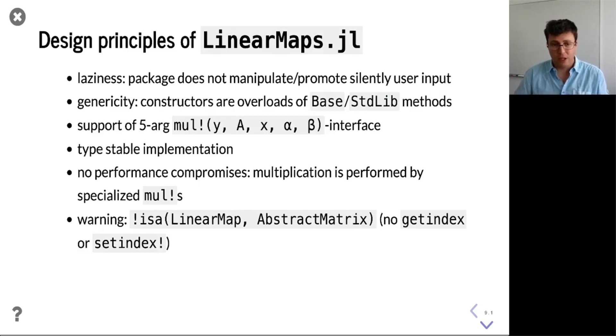We do support the five-argument mul! interface and all the constructors are implemented in a type-stable fashion. Then importantly, there are no performance compromises. So think of block maps, then when you apply the individual blocks to parts of the vector x, then that multiplication is performed by the most specialized multiplication method. So you can mix all sorts of matrix types; multiplication is always performed by the specialized and hopefully optimized multiplication methods.